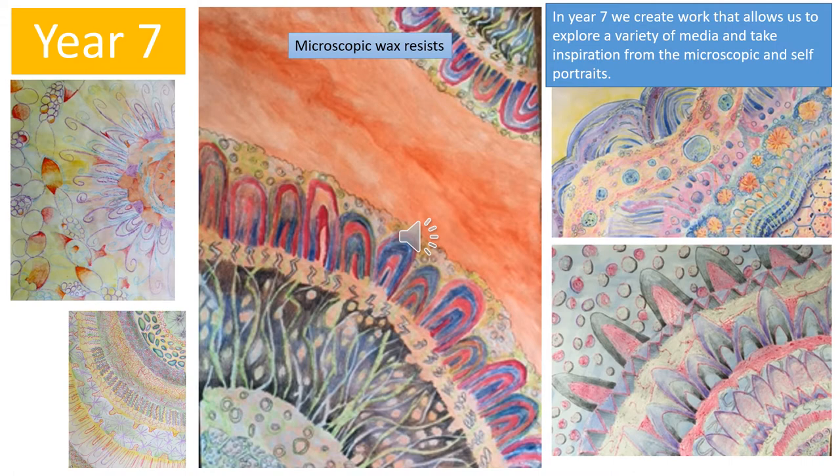In Year 7 students focus on two different projects. We take inspiration from the microscopic and look at pattern and colour to create wax resists. The second project sees students learn how to draw portraits, with the focus of creating a self-portrait at the end of the project. They focus on learning about proportion, application of tone and mark making to create a sense of texture.